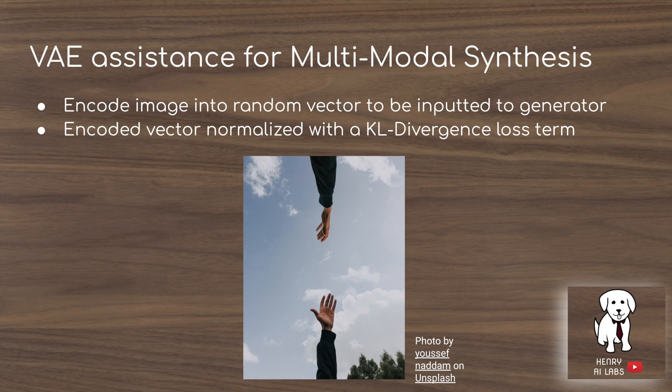To further assist multimodal synthesis, they use a variational autoencoder. You take an image, encode it with the variational autoencoder, and feed that encoding as the Z vector to the GAN. Variational autoencoders are useful because you can normalize the encoded latent space by preventing it from diverging too much from a normal Gaussian distribution using a KL divergence loss term.